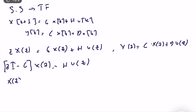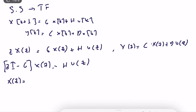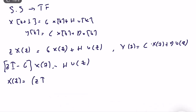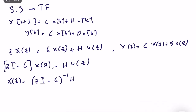Therefore, X(z) = (zI - G)⁻¹·H·U(z). This is also technically a transfer function — the transfer function from the input to all of the states of the system.